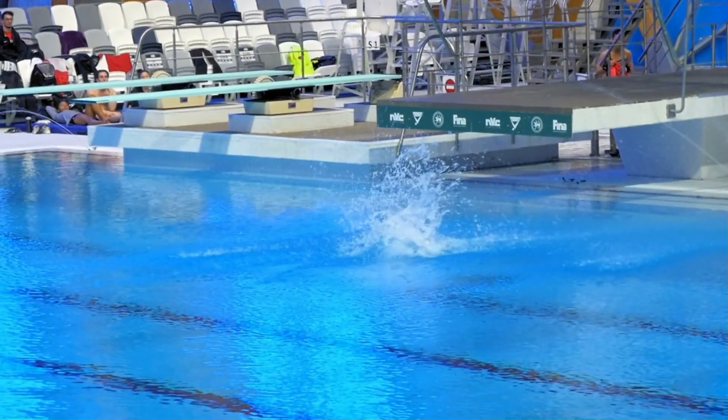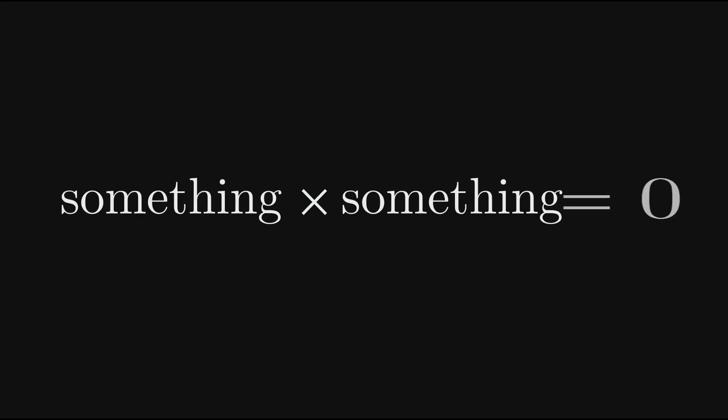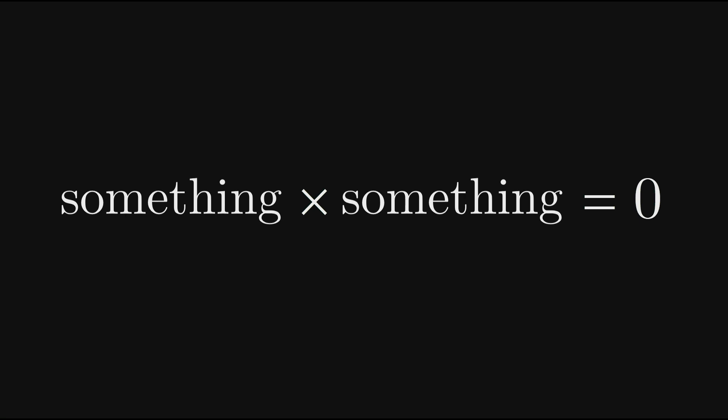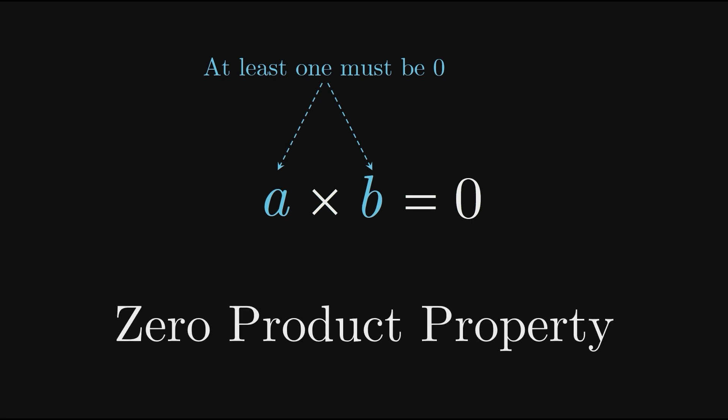Let's take a peek at how factoring can help us find what values make an expression work out to zero. Say I told you that something times something equals zero. Let's say a times b equals zero. What can you tell me about a and b? Well at least one of them has to be zero. It could be a, it could be b, or it could be both, but at least one of them must be zero. This idea is called the zero product property, and it's a property that only zero possesses.